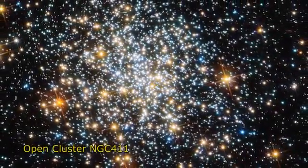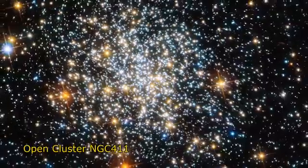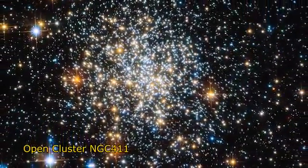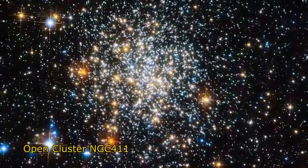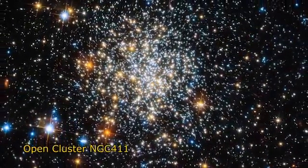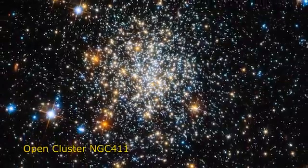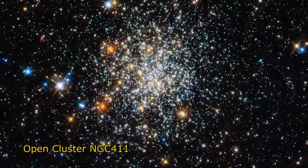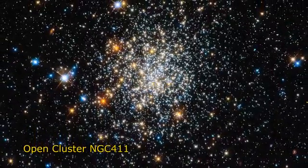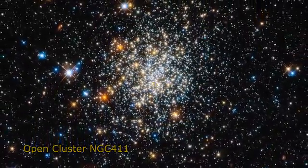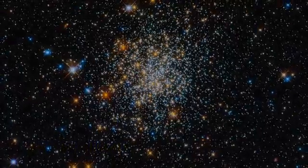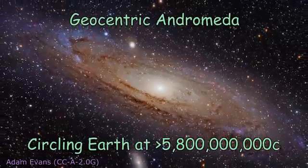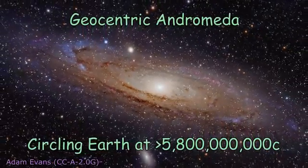Spectral analysis presents yet another problem for geocentrists. It reveals that the sun and stars are all made of essentially the same stuff in very nearly the same proportions. The stars and our sun are the same kind of object, with the same energy source — nuclear fusion. The reason all the other stars look like points of light is because they're so very far away, a simple concept that is completely incompatible with Earth being the mysterious center of the universe.